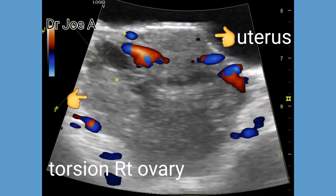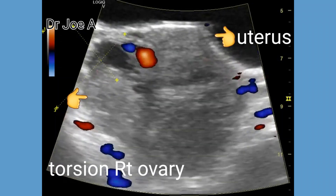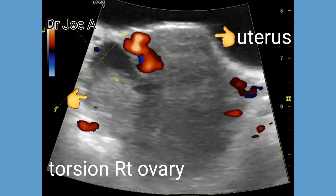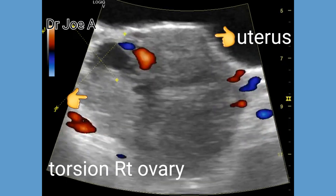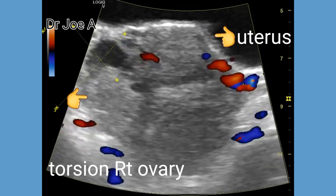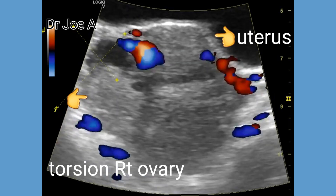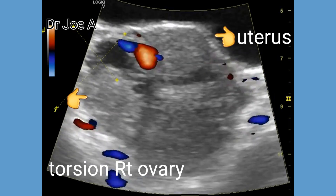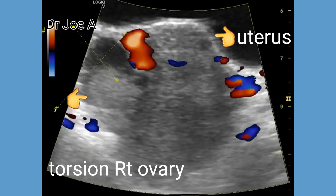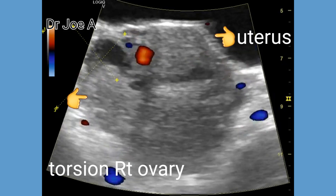This is a case of torsion of the right ovary, presenting as pain in the right hemipelvis. Transabdominal scan shows an avascular mass-like lesion posterior to the uterus.